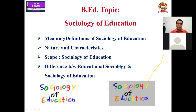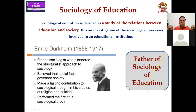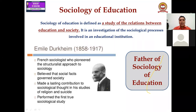So, sociology of education — basically it is defined as a study of relations between education and society. Sociology is the study of society, but we are talking about sociology of education. Sociology of education is a scientific study of what relationship exists between education and society. Sociology of education is an investigation of sociological processes involved in educational institutions — meaning whatever we have in our schools and colleges, there is so much effect on our society.